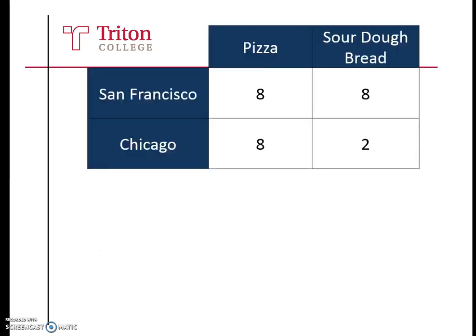Let's have an example. Let's assume there's two cities, San Francisco and Chicago, and each city can produce either pizza or sourdough. San Francisco in one day can produce eight units of pizza or eight units of sourdough bread. In Chicago, if allocating all its resources, can produce eight units of pizza or two units of sourdough bread.